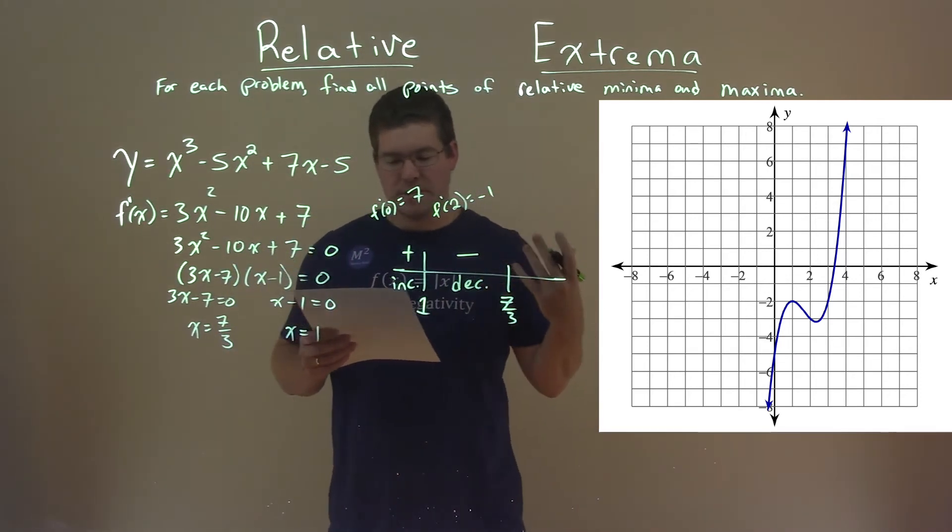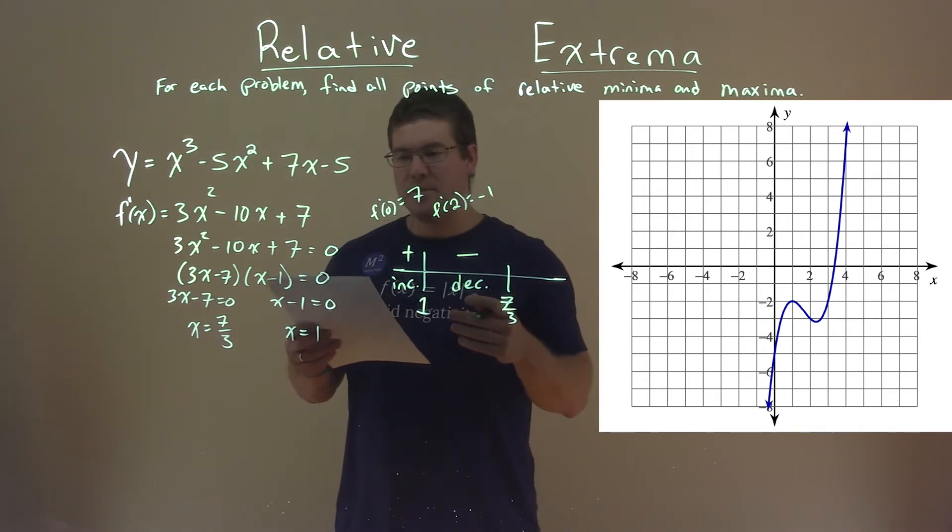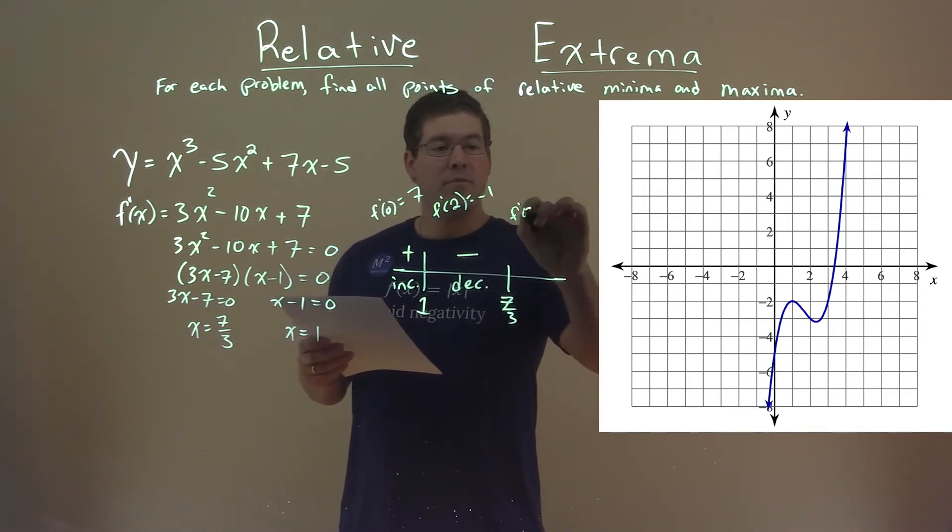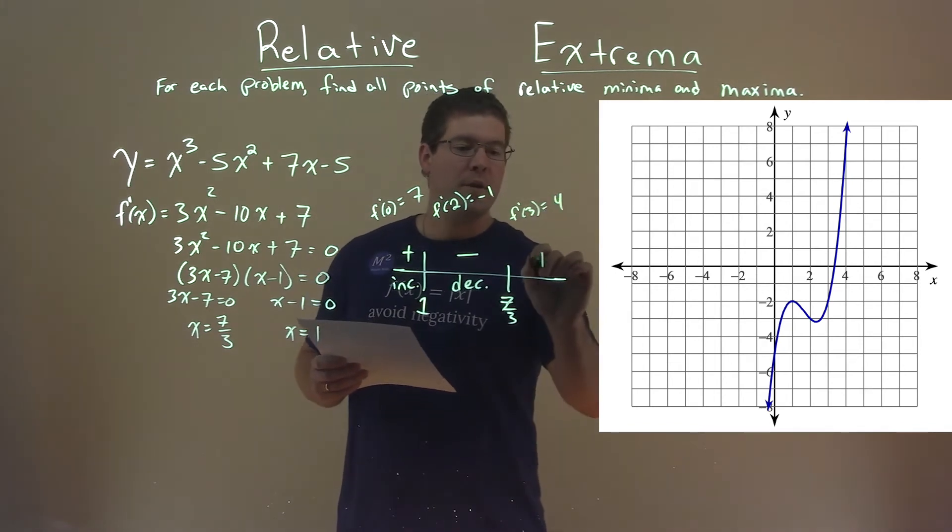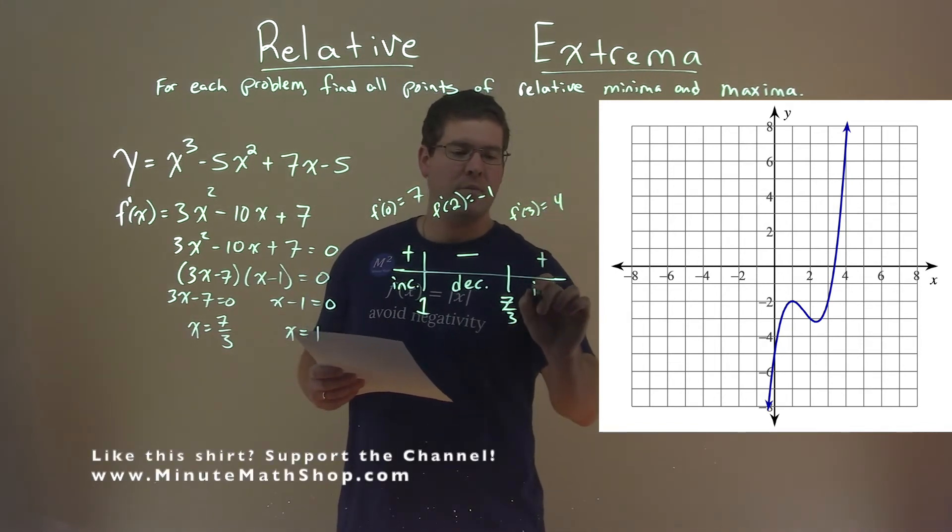From there, I found a value larger than 7 thirds, and I picked 3. So f prime of 3 came out to be a positive 4. It's positive, that's what I care about, meaning we're increasing here.